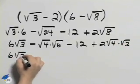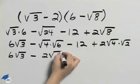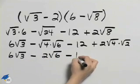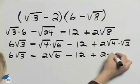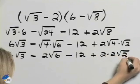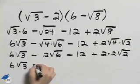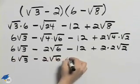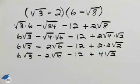We can then simplify the radicals even further. Square root of 4 is 2, square root of 6. And then we'll have 2 times 2 square root of 2. We'll clean this up just a little bit more. The last term can be written as 4 square root of 2.